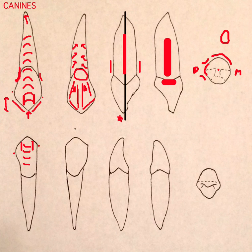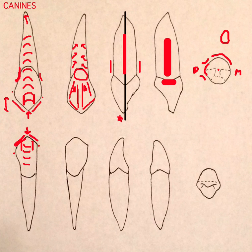The mandibular canine has one cusp. It has a mesial cusp ridge and a distal cusp ridge. The distal cusp ridge is longer than the mesial cusp ridge, which is the same as the maxillary canine when it first erupts.